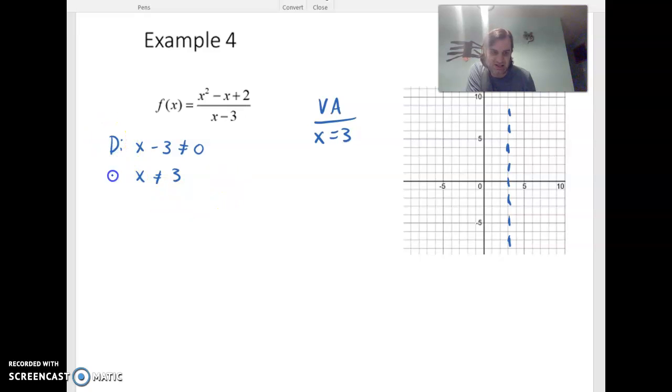And then I need to work on the horizontal asymptote, and that comes from my numerator and denominator exponent. So I have an x squared up top, so that m on top is 2, the n on bottom is 1. M is greater than n, so there's no horizontal asymptote.